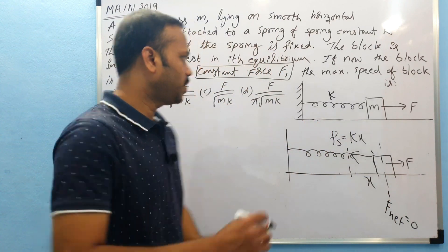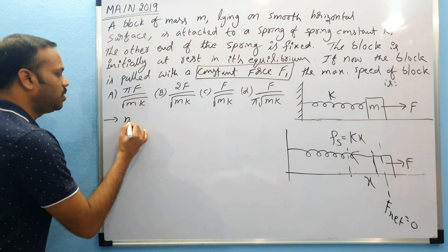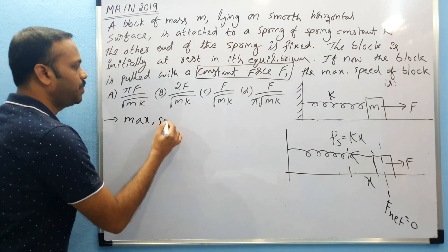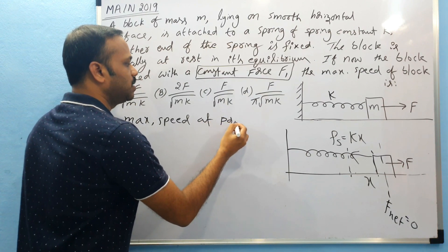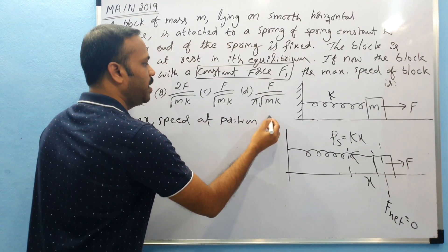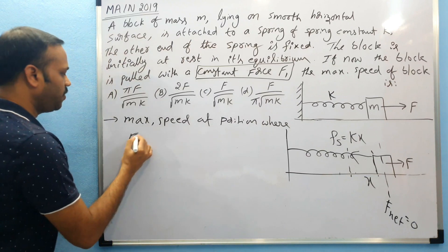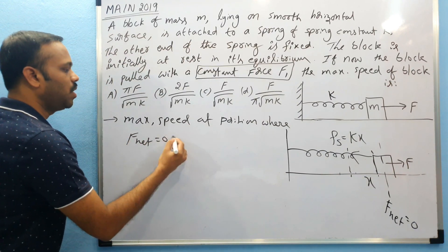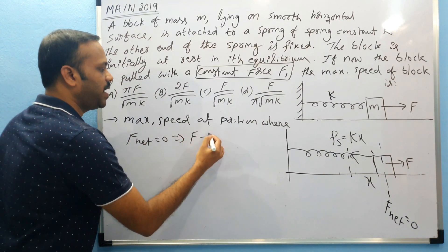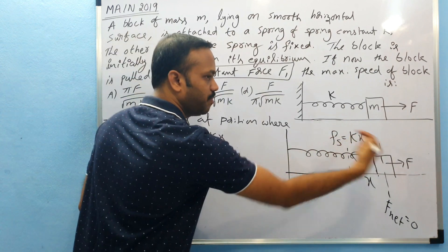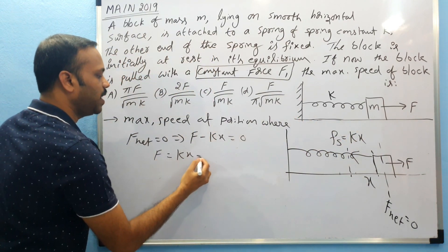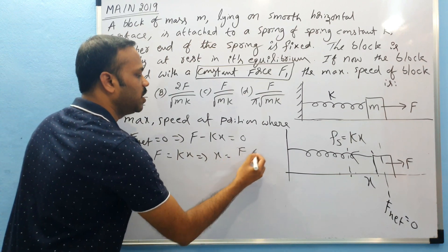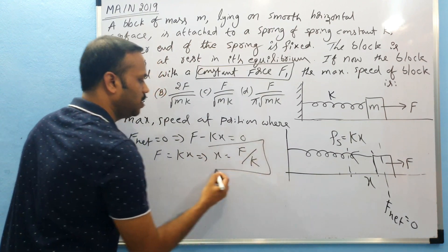So that is an important point. You get maximum speed at position where F net is zero. What is F net? F minus kx. F minus kx is equal to zero, that means F is equal to kx, that means x equal to F by k. So at this position you get maximum speed.